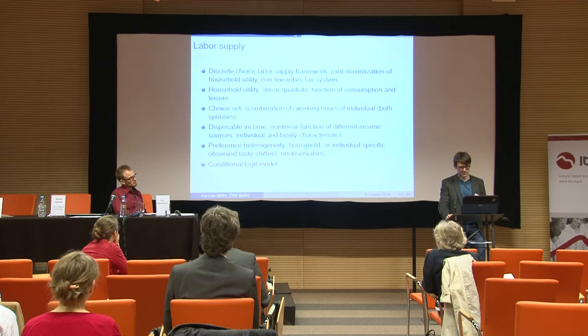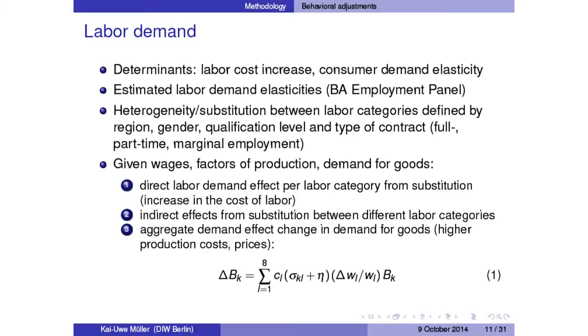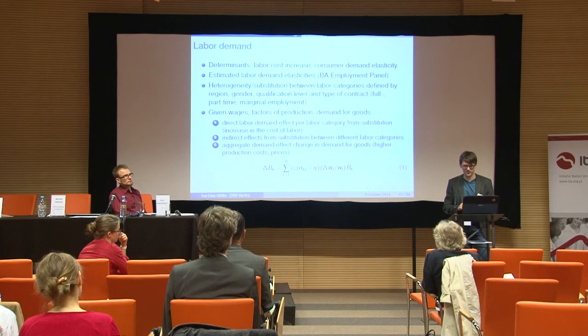We translate those income changes into behavioral changes in terms of labor supply. Then we have a labor demand part. So far this is a micro model — we calculate wage effects, income effects, and labor supply effects at the individual or household level. For labor demand, we cannot do this at the micro level. We calculate labor cost increases following the increase in wages due to a minimum wage.